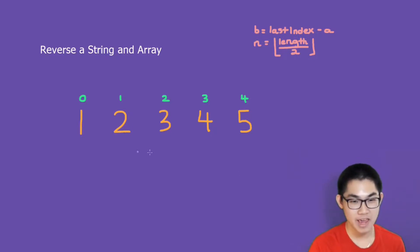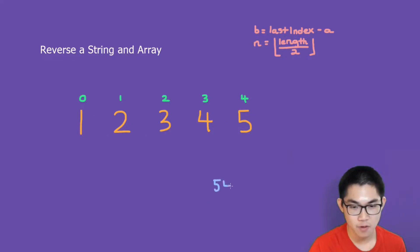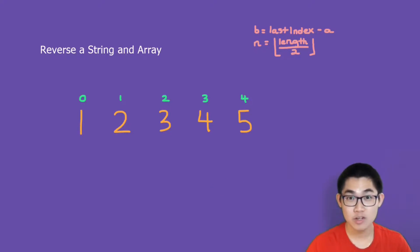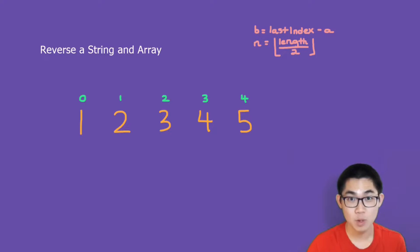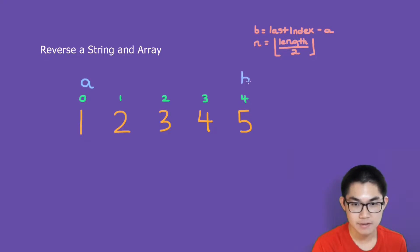So we have this array — or you can call this a string if you want to — and we want to reverse it so that afterwards we get 5, 4, 3, 2, and 1. In order to do the reversal, let's pretend we have two people to help us. We have A and B. I'm going to place A right here, and B right here.